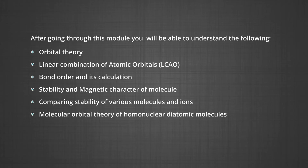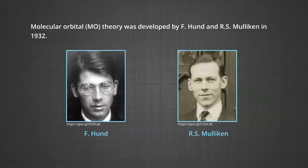Molecular orbital theory of homonuclear diatomic molecules and hydrogen bonding. First of all, molecular orbital theory. The molecular orbital (MO) theory was developed by F. Hund and R. S. Mulliken in 1932.